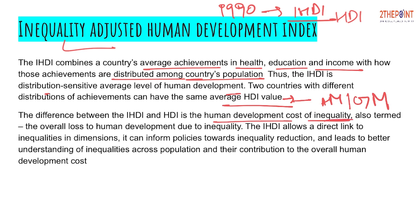The key difference between HDI and IHDI is the human development cost of inequality. The Inequality Adjusted HDI revolves around the inequality that exists in society — in distribution of resources, access to opportunities, education, and health facilities. The IHDI allows a direct link to inequalities in the three dimensions of HDI and can inform policy towards inequality reduction, helping governments gauge and address inequality in their country.